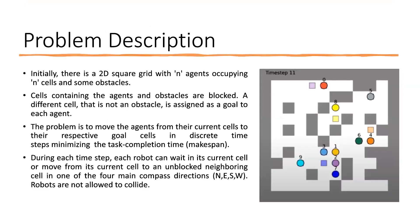This is the problem description. As you can see in the picture on the right, we initially have a 2D grid with some free cells and blocked cells. The gray cells are the blocked cells — those are the obstacles — and white cells are the free cells. We have n number of agents, encircled with different colors. The problem statement is to move the agents from their initial starting position to their goal position simultaneously, minimizing the task completion time, also called makespan.